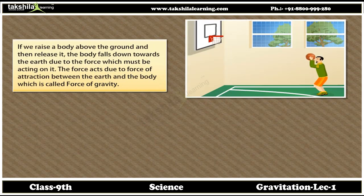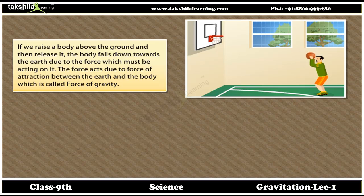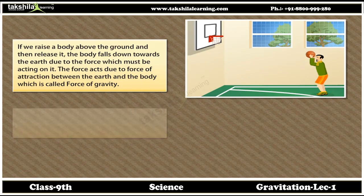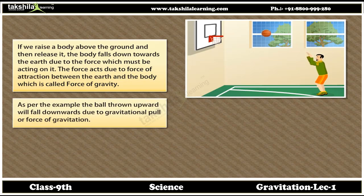If we raise a body above the ground and then release it, the body falls down towards the earth due to the force acting on it. This force acts due to the force of attraction between the earth and the body, which is called force of gravity. For example, a ball thrown upward will fall downwards due to gravitational pull or force of gravitation.